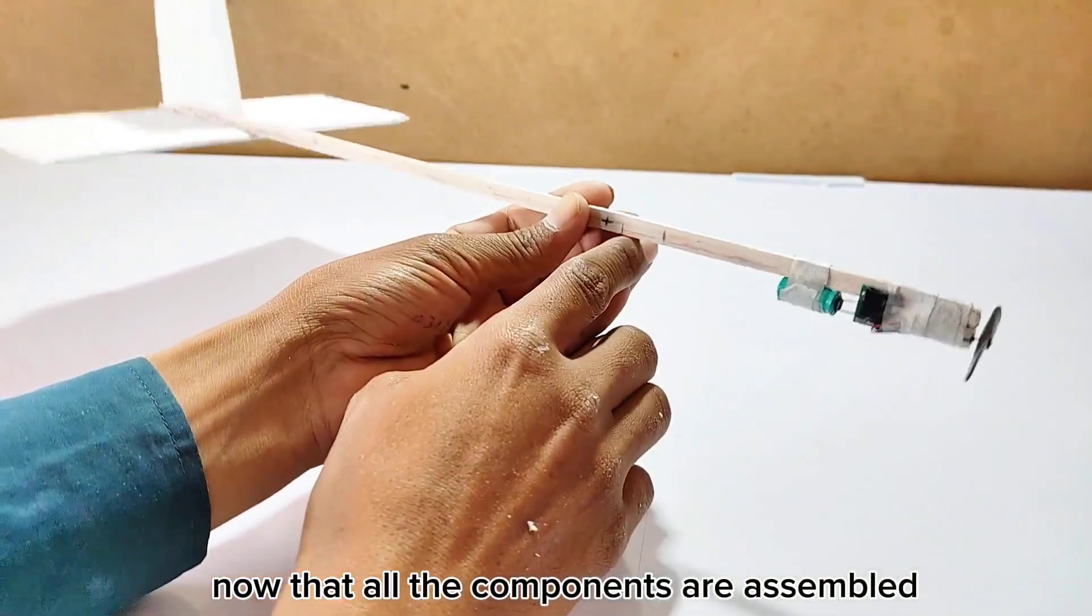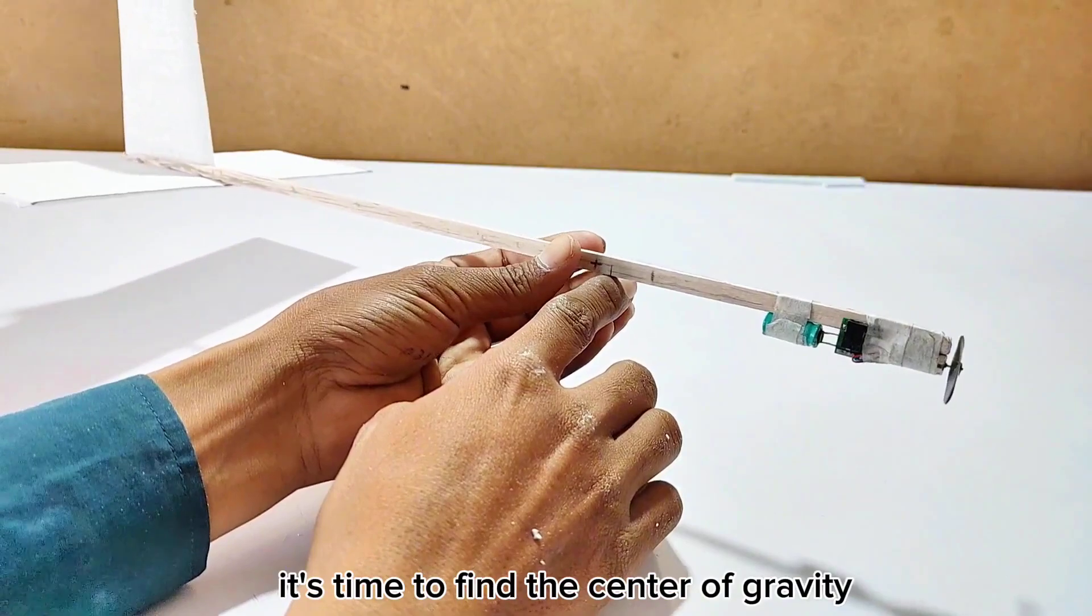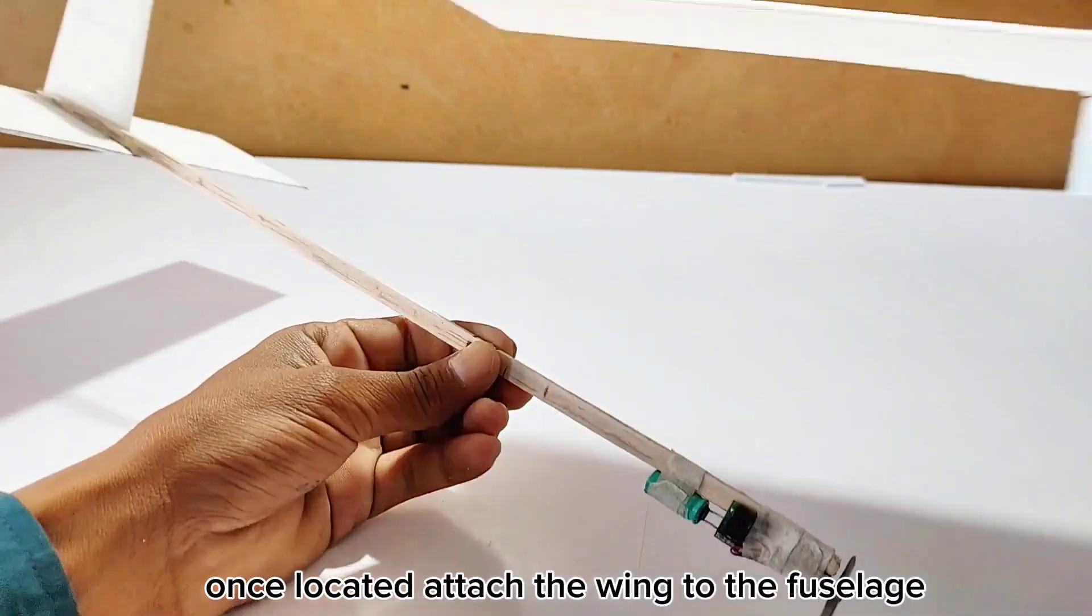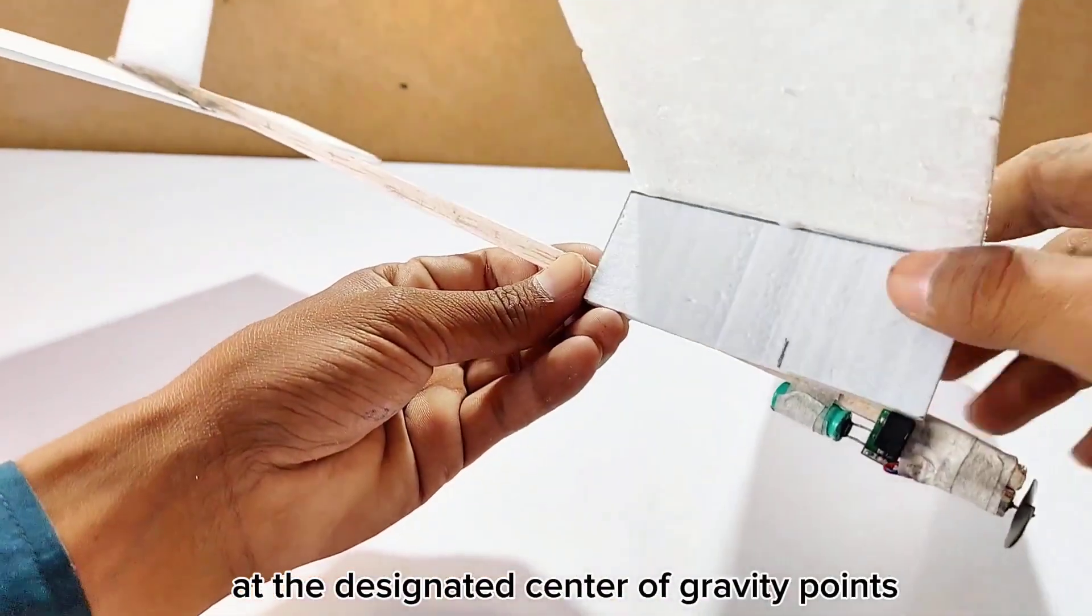Now that all the components are assembled, it's time to find the center of gravity for both the fuselage and the wing. Once located, attach the wing to the fuselage at the designated center of gravity points.